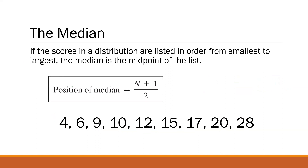If the scores in a distribution are listed in order from smallest to largest, the median is the midpoint of the list. Take note of the keyword — the median is the midpoint. It is the middlemost value, and compared to the mean, it is easier to determine. It is not as sensitive to outliers and extreme scores, which makes it a good alternative when we have outliers or a skewed distribution.